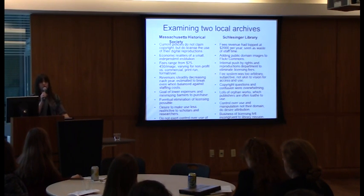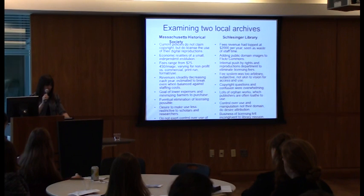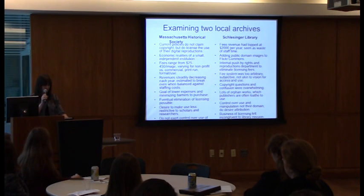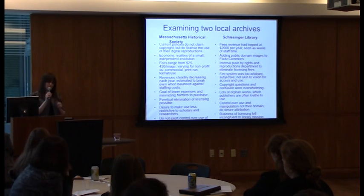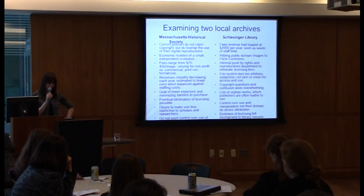Cultural heritage institutions cannot afford to ignore the socio-technological tide ushering in open access. Even as more materials are digitized and made available online, many institutions still assert copyright claims over reproductions of public domain images, or continue to license their use with complicated policies that potentially provide minimal return. While creator and institutional rights must be protected, in the U.S. copyright is intended to promote economic and social betterment. To close with a quote from the 1975 Supreme Court case 20th Century Music Corp. v. Aiken: 'Creative work is to be encouraged and rewarded, but private motivation must ultimately serve the cause of promoting broad public availability of literature, music, and the other arts. The ultimate aim is by this incentive to stimulate artistic creativity for the general public good.' Thank you very much.